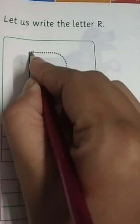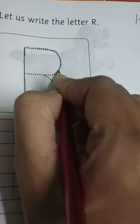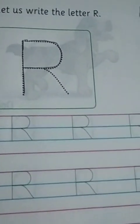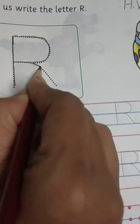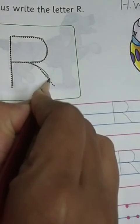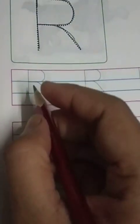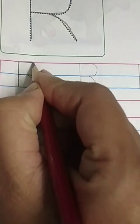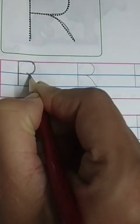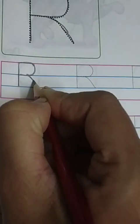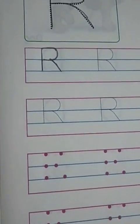Make a standing line like this. Now make letter P — like this. And then make a slanting line like this. Now trace this one: firstly a standing line, then letter P, and then a slanting line to make letter R. Trace these two lines to write letter R.